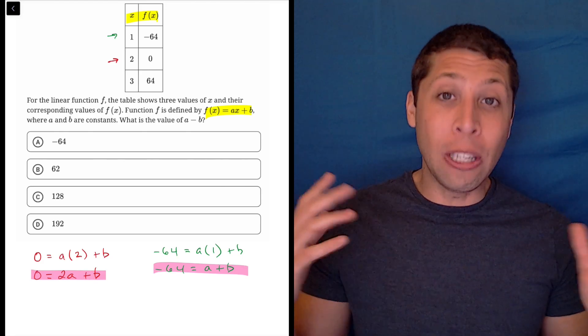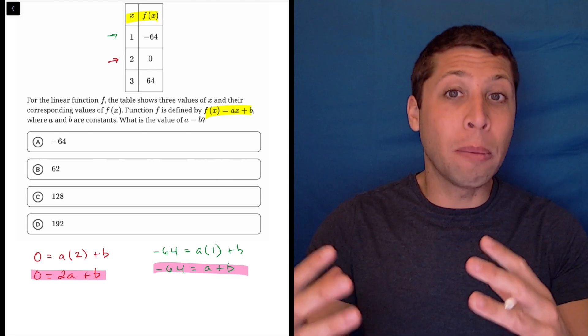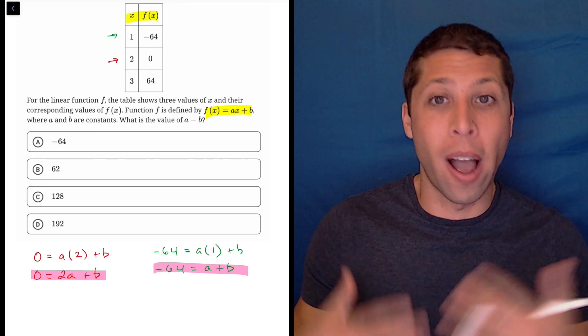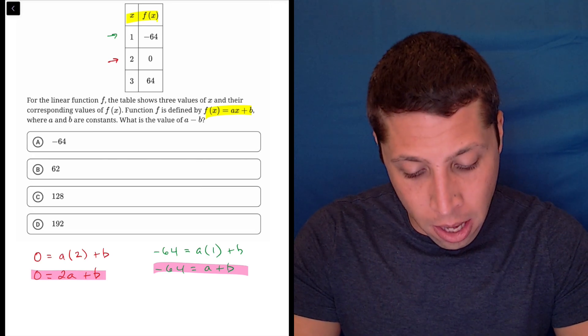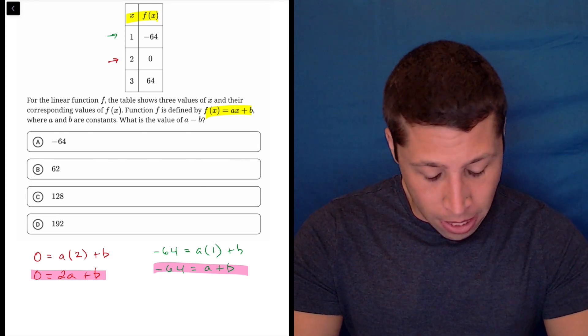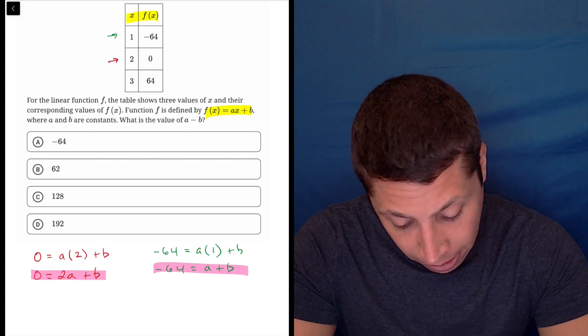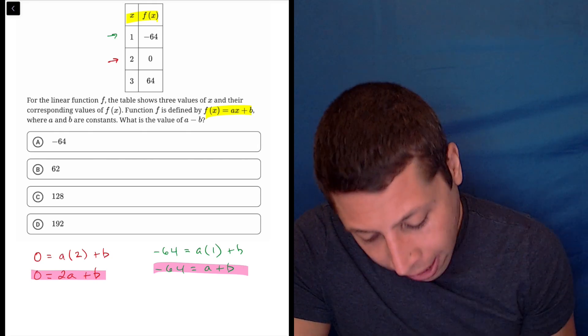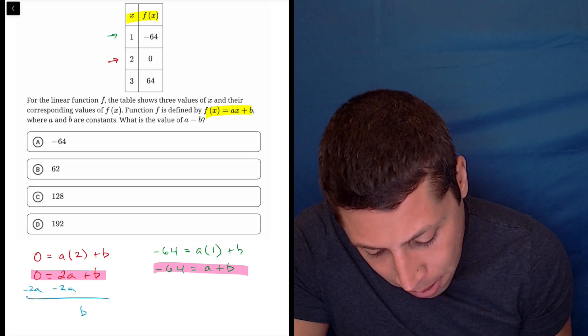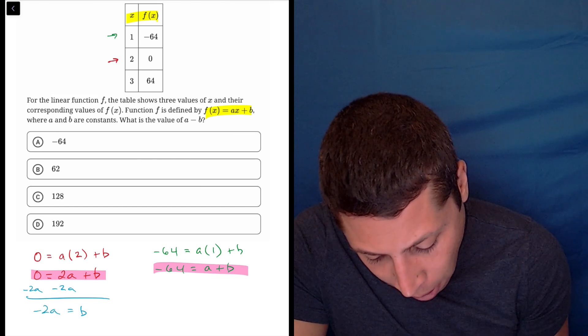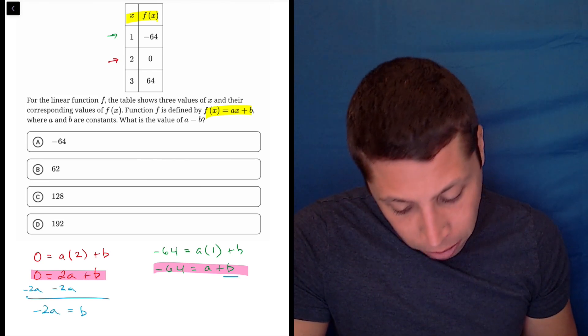So we don't have an x and a y, but we do have two variables that we can solve using substitution. So what I would do from here, I would probably subtract the 2a from both sides, and I would get that b is equal to negative 2a, which I can then substitute for the b in here.